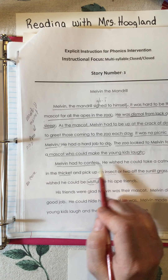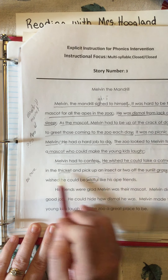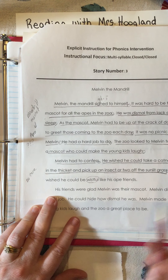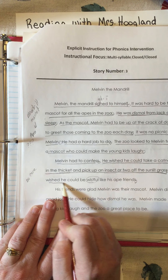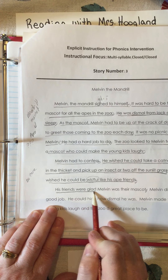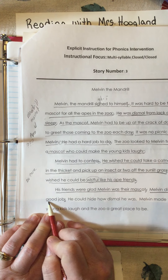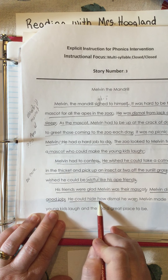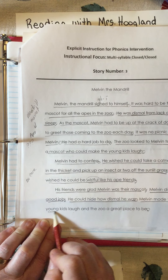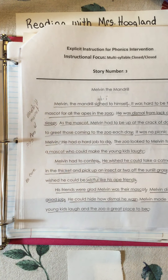Here's a short sentence: 'Melvin had to confess he wished' - we're going to go all the way to the end of this sentence: 'he wished he could take a catnap in the thicket and pick up an insect or two off the sunlit grass.' Period right here: 'He wished he could be wistful like his ape friends.' 'His friends were glad Melvin was their mascot.' 'Melvin did a great job.' 'He could hide how dismal he was.' 'Melvin made the young kids laugh and the zoo a great place to be.'